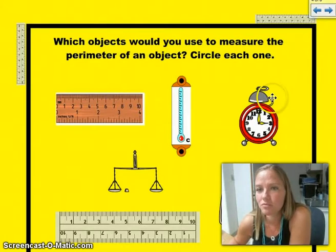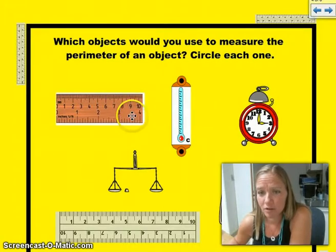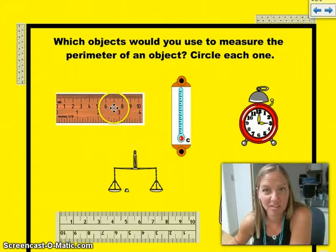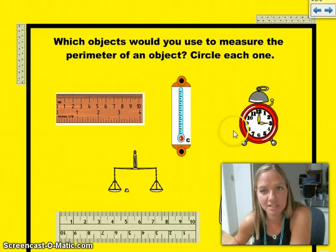Which objects would you use to measure the perimeter of an object? We have looks like a wooden ruler here, we have a thermometer, a clock, a scale, and another type of scale, and another type of ruler or meter stick. So go ahead and write those things down. I'll just give you a couple seconds to do that. Which of those things do you think would be great to do? Write down at least one or two.